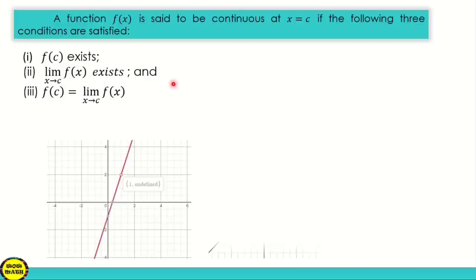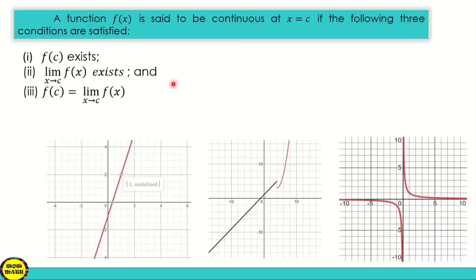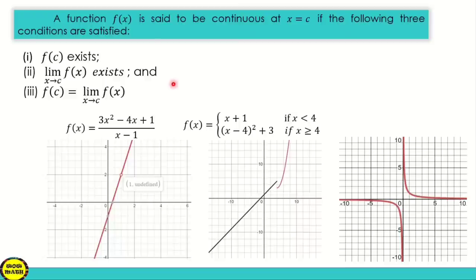Given three graphs, these graphs show that the function is discontinuous. These three graphs each demonstrate a different type of discontinuity. So, what are the differences among these three graphs?